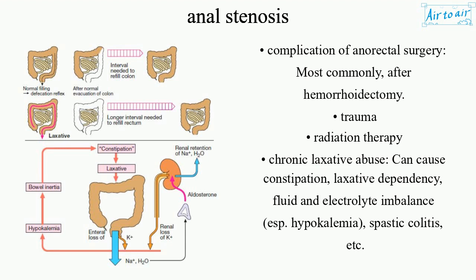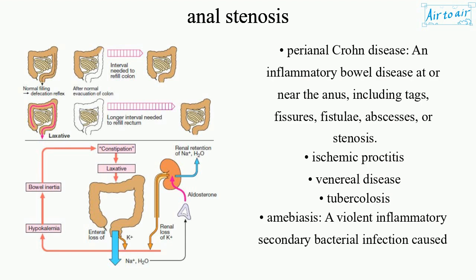Perianal Crohn's disease — an inflammatory bowel disease at or near the anus — can present with tags, fissures, fistulae, abscesses, or stenosis. Other causes include ischemic proctitis, venereal disease, tuberculosis, and amoebiasis.